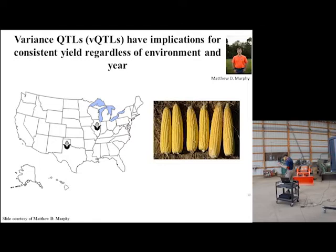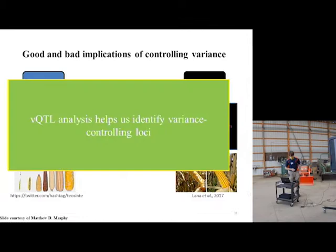Let's say we want to plant them here in Urbana or in Texas — we want to have the same uniform stability in our observed traits. Well, if we develop statistical approaches for identifying markers that control that variability, we can achieve this.